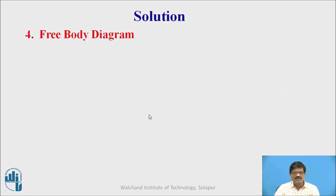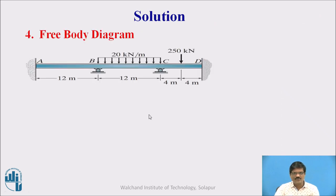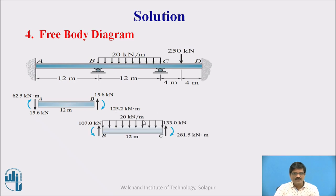Once the moments are determined, then we shall go for the free body diagrams. So using our final values which obtained in the previous slide, we can draw the free body diagram AB. So here this is 62.5 kNm AB and BA is 125.2 kNm. Then BC. This moment is 281.5 kNm. And for CD in the same way we draw the free body diagram.